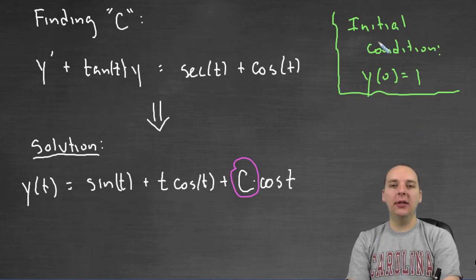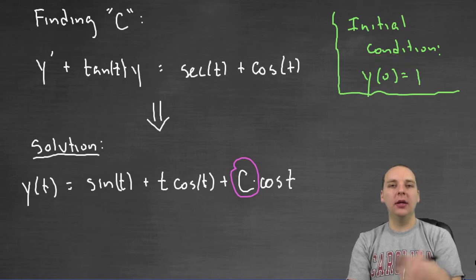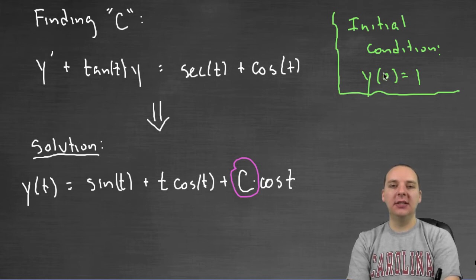However, when we want it to satisfy an initial condition, that nails it down to only one answer. So how do we find this specific C given this as an initial condition?